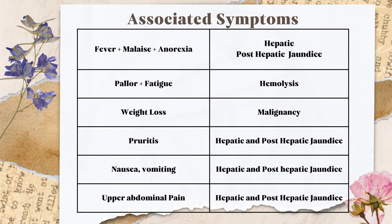If the patient has associated pallor and fatigue, the patient might be having hemolysis. Beginning with general symptoms: ask about pallor and fatigue — if yes, that suggests hemolysis. If the patient has significant weight loss — more than 10% in the last 6 months — that might be a case of malignancy, either hepatic or extra-hepatic with hepatic metastases. One or two kilos is not considered significant weight loss.